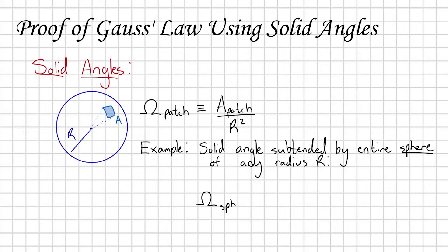Let's find the solid angle subtended by any closed spherical shell of radius r. The surface area of a sphere is 4π r squared, and dividing by r squared gives us a solid angle of 4π.